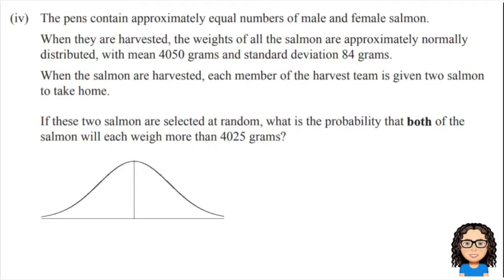Here is our question. The question has now evolved. We're still talking about salmon but now they're talking about combining the male and female salmon together and harvesting them. When they're harvested, the weight has a mean of 4050 grams and a standard deviation of 84 grams. The first thing I'm going to do is draw a little normal diagram and add that information on, so that's got a mean of 4050 and a standard deviation of 84.